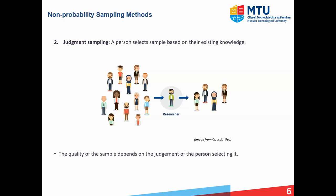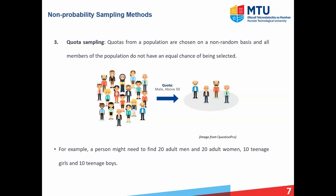Another non-probability sampling method is judgment sampling, where you as the researcher choose the people that enter your sample based on your knowledge. The quality of the sample depends on you and how you choose to include people. The final non-probability method is quota sampling, where quotas or groups of a specific type are chosen from a population on a non-random basis, meaning not all members have an equal chance of being selected. For example, selecting males above 50 eliminates others, and other quota examples include finding 20 men, 20 women, teenage girls, and teenage boys.